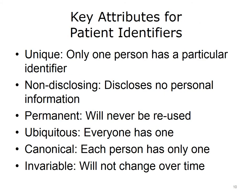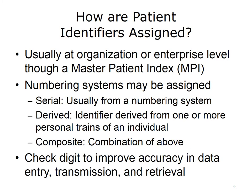What are some of the key attributes we would want in patient identifiers? These were laid out in a report by Connecting for Health published in 2005. We want the identifier to be unique, so that only one person has a particular identifier and it's not assigned to anyone else. The identifier should not be disclosing — it should be some sort of code that doesn't reveal anything personal about the individual. The identifier should be permanent, so once assigned it's never reused. It should be ubiquitous, meaning everyone should have one. It should be canonical, so each person has only one, not multiples. Finally, the identifier should be invariable — it should not change over time.